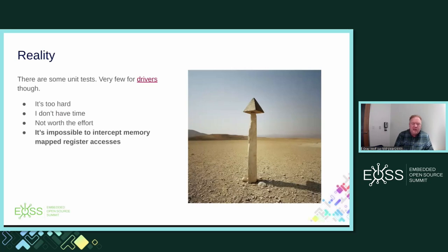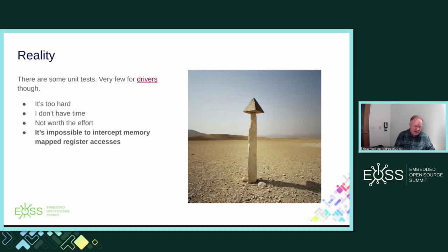But what we have on Zephyr looks a little more like this right now. We have a few tests run on real hardware and very little for unit tests. And here are some common excuses — and the one in bold: 'It just can't be done. There's just no way to intercept these register accesses.' This is the one I want to talk about today, because I think we've got a potential mechanism to do this.